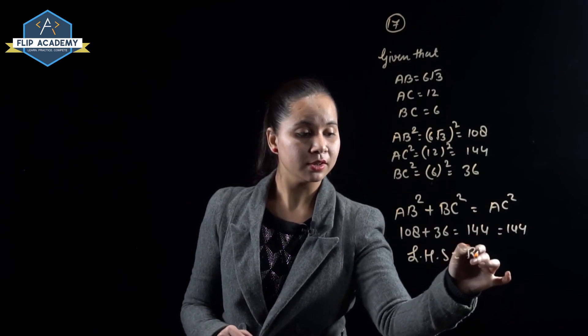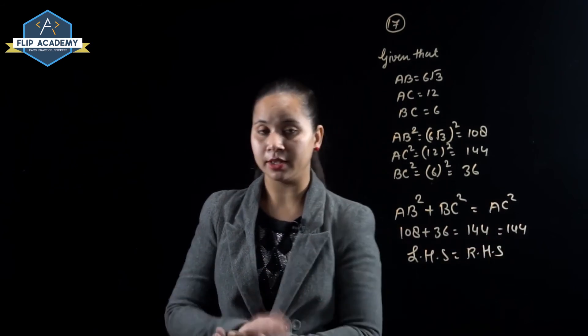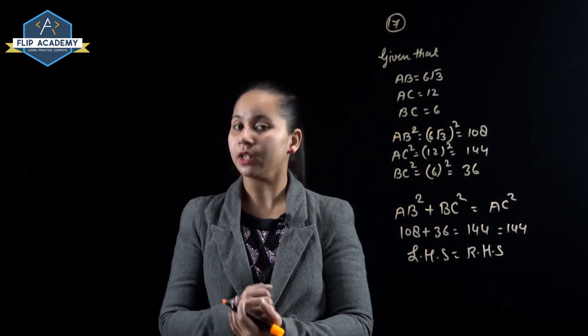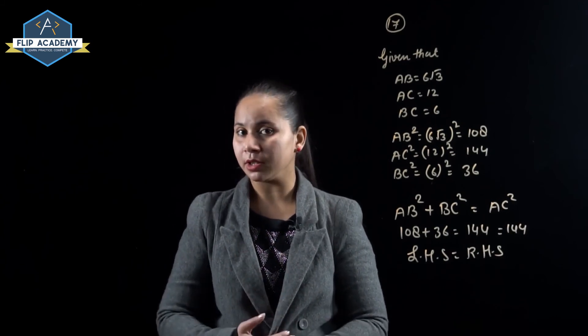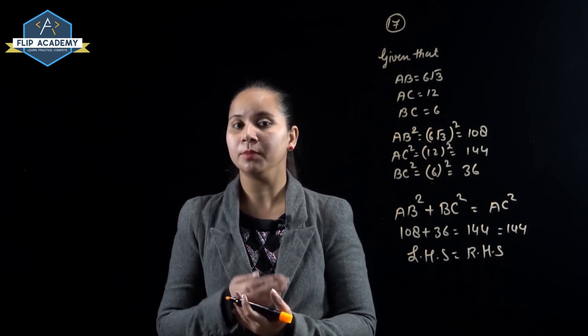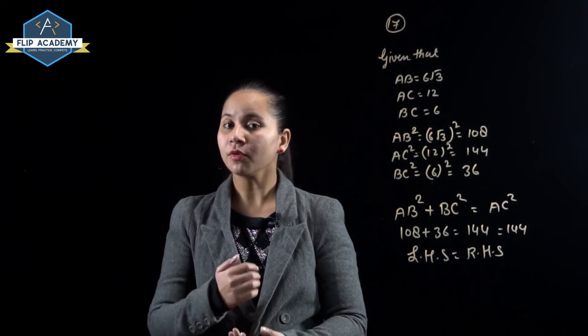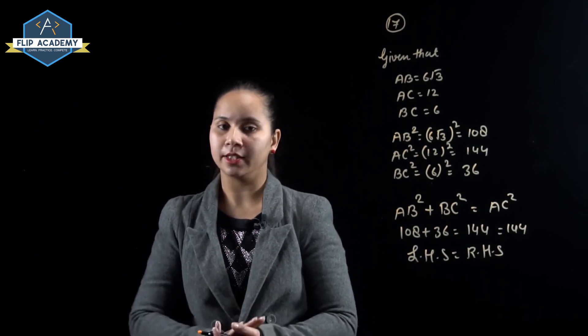LHS equals RHS, confirming the Pythagorean theorem is satisfied. If the Pythagoras theorem holds, angle B becomes 90 degrees. So option C is correct.